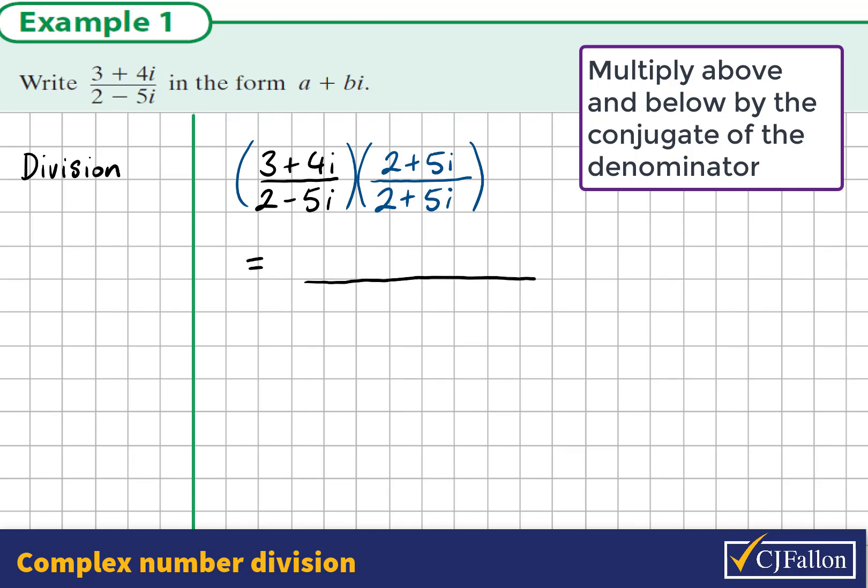When we multiply out the numerator, we could use the array first, but we're probably used to these binomial multiplications. There's 4 parts: 3 by 2, 3 by 5i, 4i by 2, and 4i by 5i. This gives positive 20i squared.